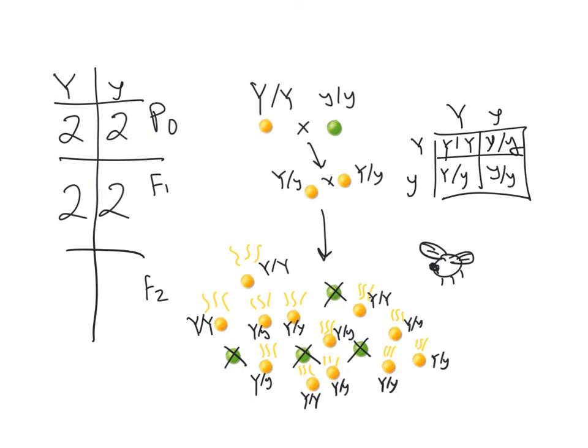But what happened in this case is that all of the homozygotes, the lowercase y over lowercase y plants, or peas, have been destroyed. So let's see what happens now when we calculate allele frequency. Is this population still in Hardy-Weinberg equilibrium? Did the number of Ys, capital and lowercase, stay the same from generation to generation?